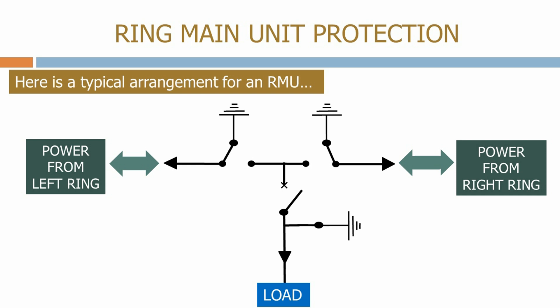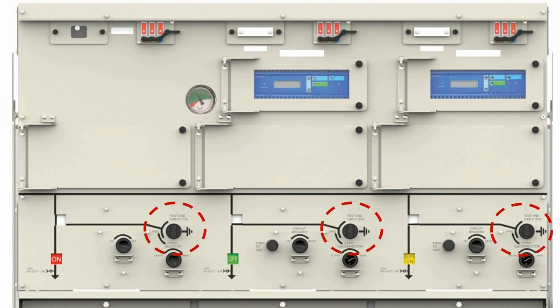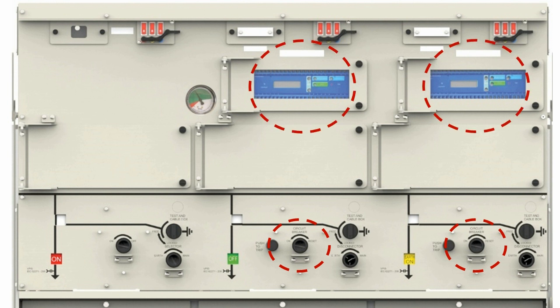If we look at the front of a typical RMU we can see the manual controls for the circuit breaker, ground switches and isolators. You will notice that this particular RMU has replaced one of the ring isolators with a circuit breaker. The RMU suppliers will give you any combination of isolators and circuit breakers that you require. In this version we have circuit breakers on two of the legs — you can tell this by looking at the control switches and by the fact that we have a bay controller for each of the circuit breakers.